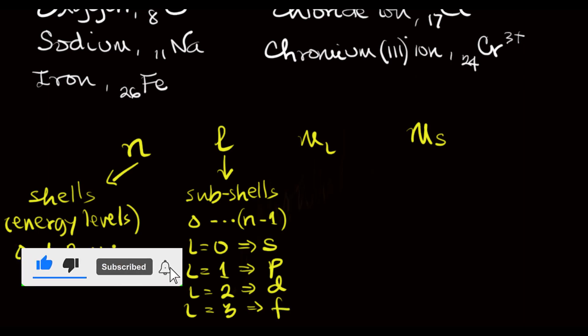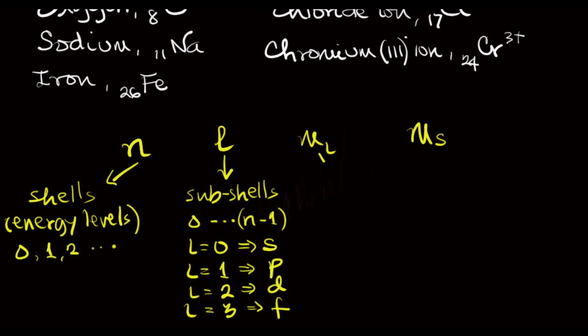The magnetic quantum number M sub L divides the subshells into orbitals, and its values depend on the values of L, which range from minus L through 0 to plus L. Which means that when L is 0, M sub L is also 0 — that's only one orbital.